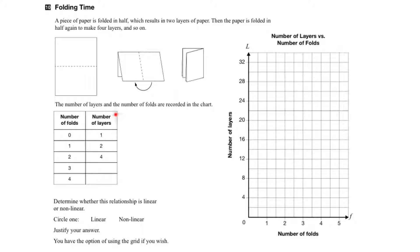Think of the number of layers as the thickness of the paper. For example, if we haven't folded it in half yet, the paper will be one layer thick. And after we fold it in half, it'll be two layers thick. And if we fold it in half again, it'll be four layers thick.